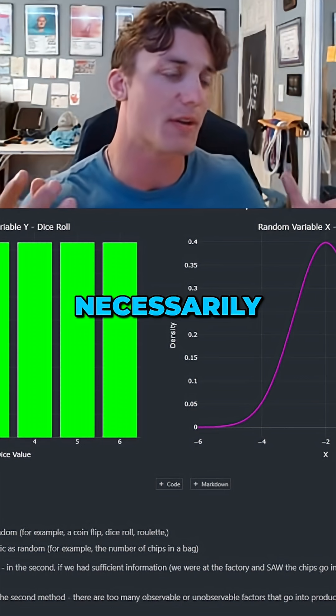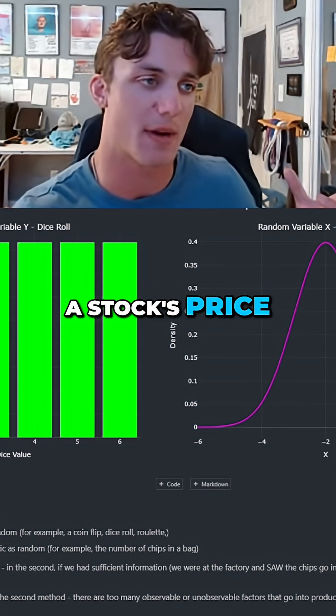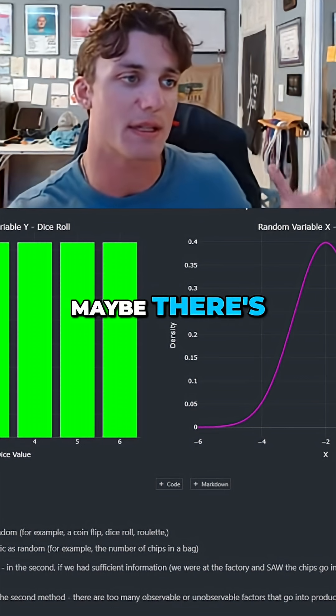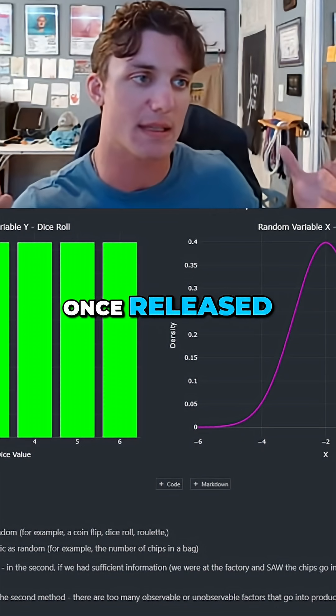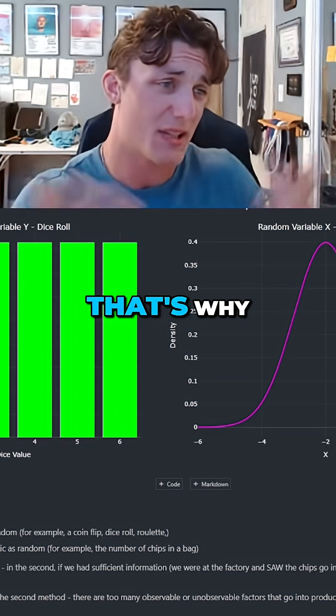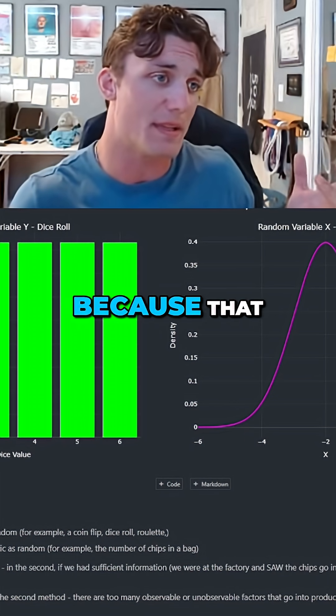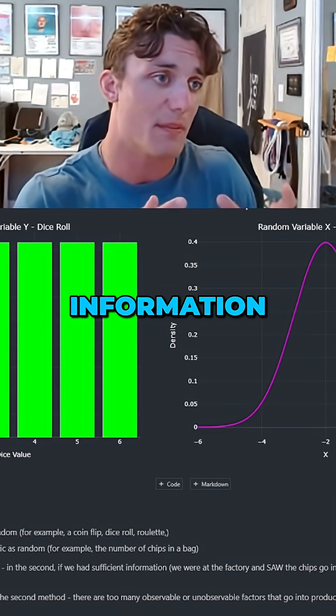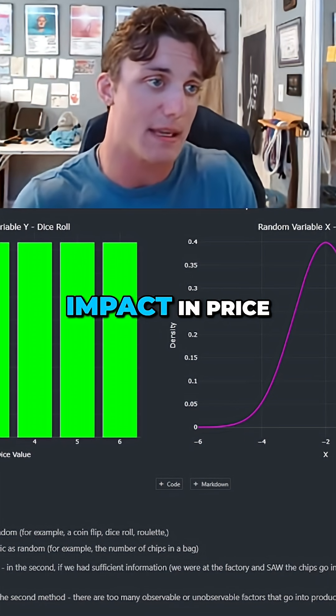But that's not necessarily true for something like a stock's price. Maybe there's insider information that once released is going to cause a massive uptick or a massive downtick in price. It's why insider trading is illegal - because that information predates the impact in price.